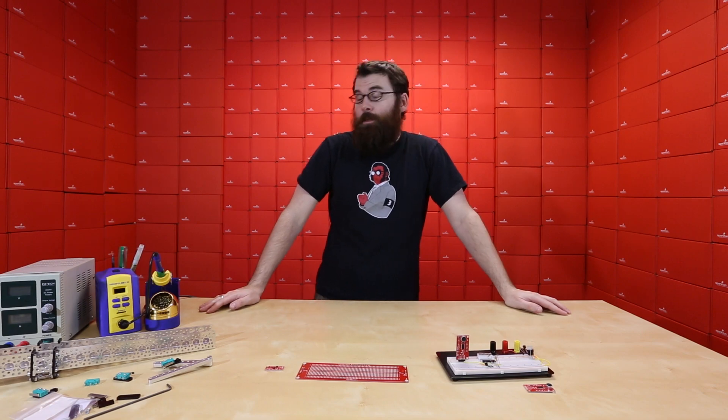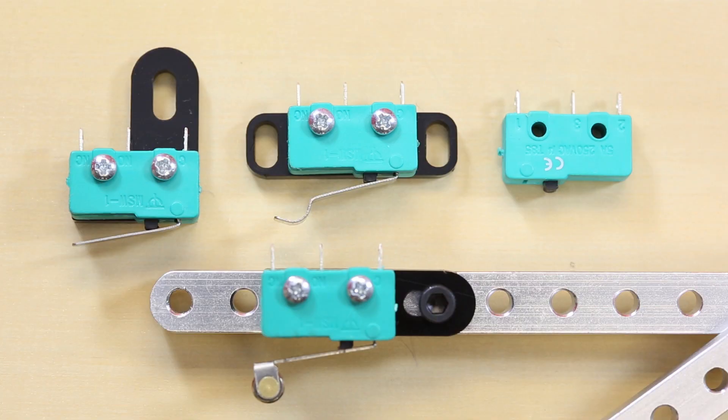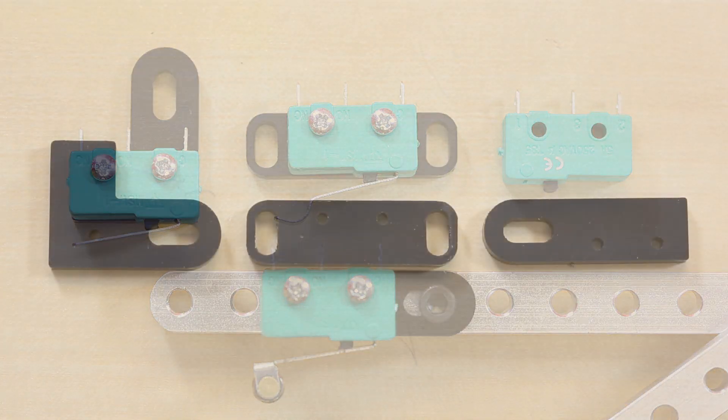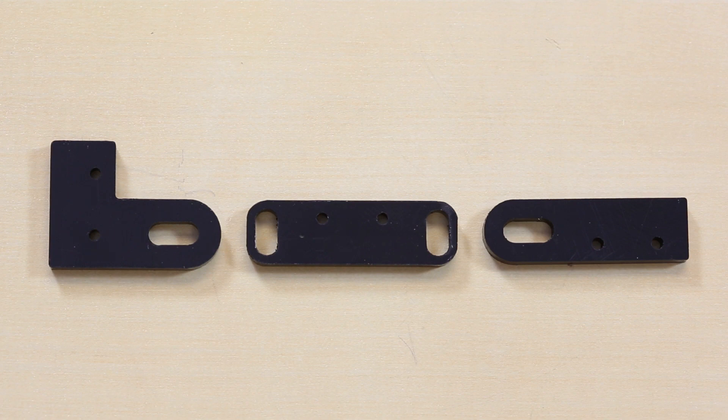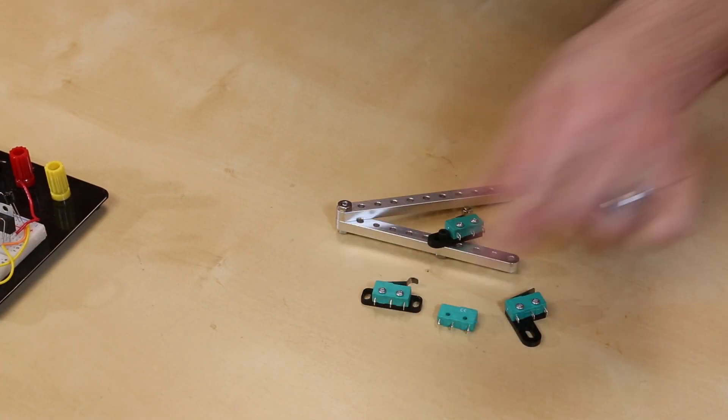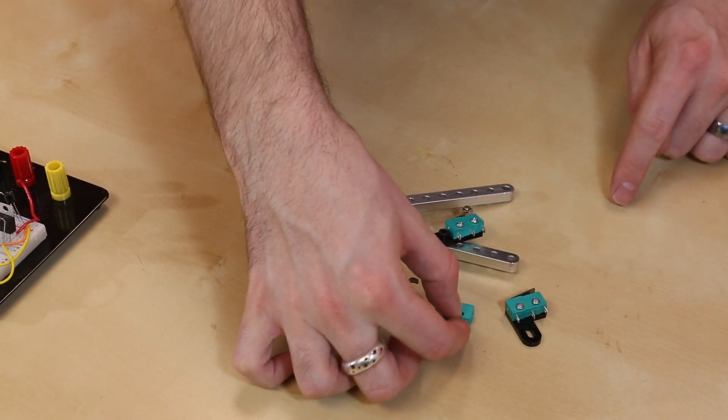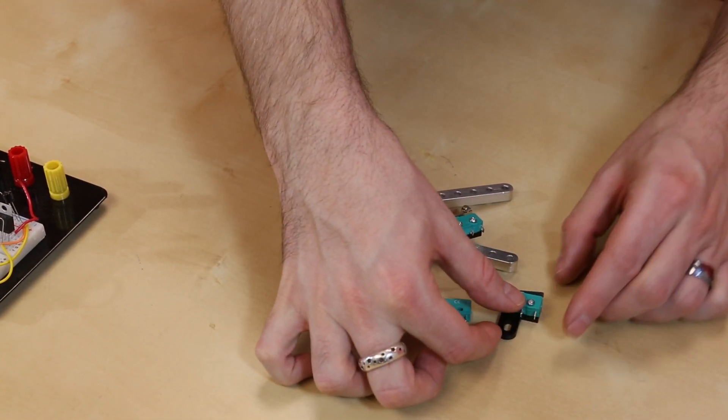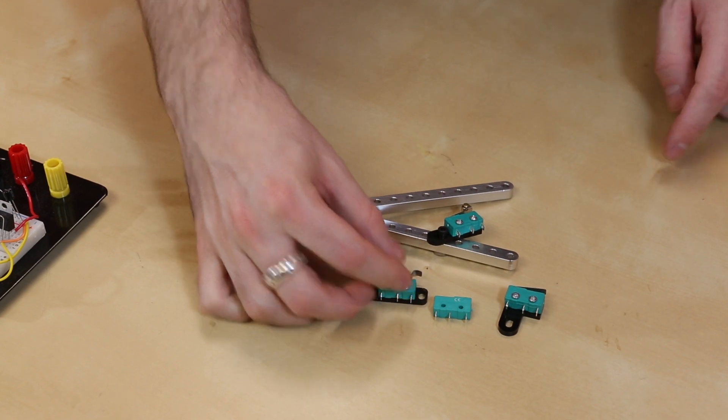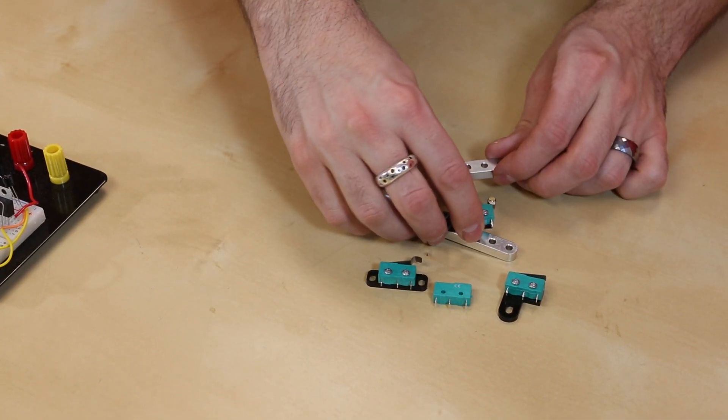We have a couple new products from Actobotics this week, specifically four new micro switches as well as three little mounting tabs. We have them in four different varieties. We have the standard with just a little switch on top, we've got the straight lever, we've got the curved lever, and then we also have the roller lever.